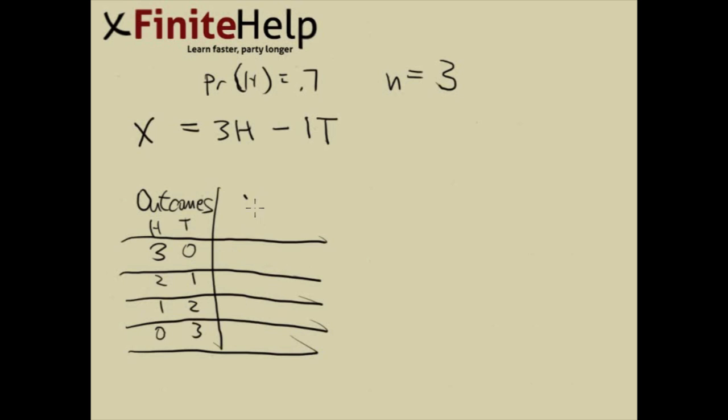And now we want to look at the X values. If you have 3 heads, simply treat this like an algebra substitution kind of thing. So 3 times 3 is 9 minus 1 times 0 which is 0. So 3 times 3 minus 1 times 0 which is going to be 9.